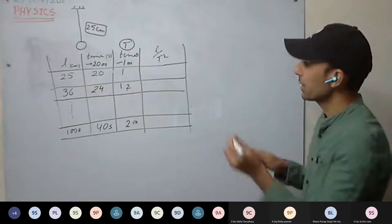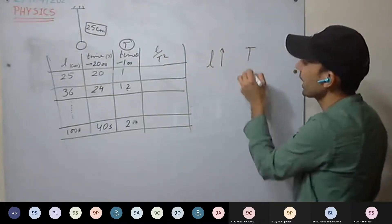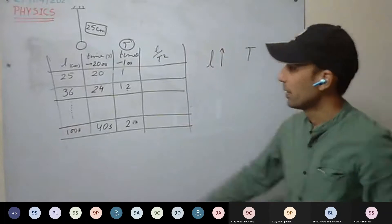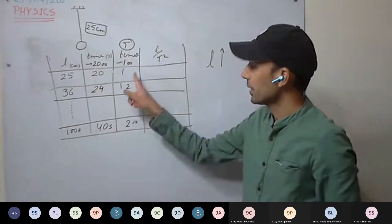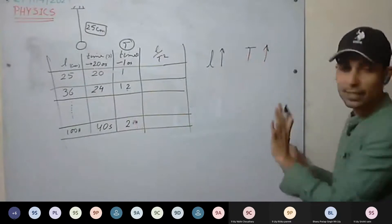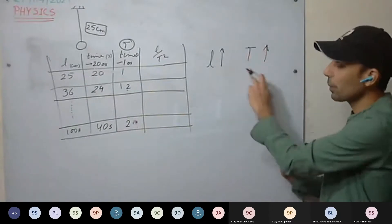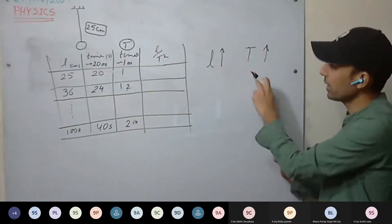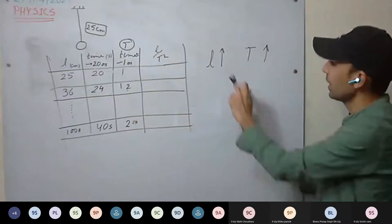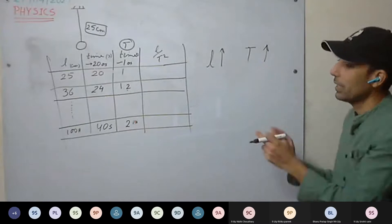Some observations we can make: as length is increasing, time period is also increasing. So they are directly proportional. As length is increasing, time period is increasing.